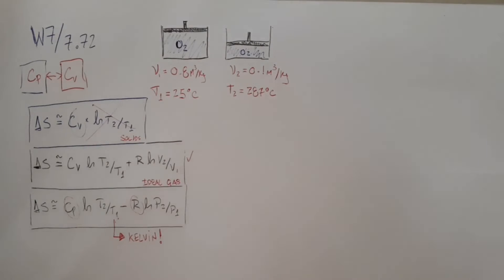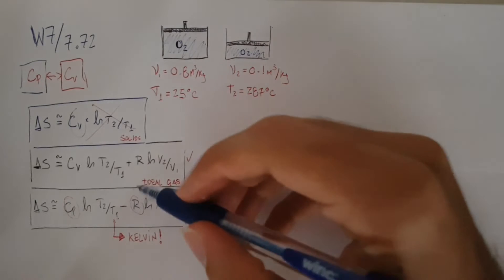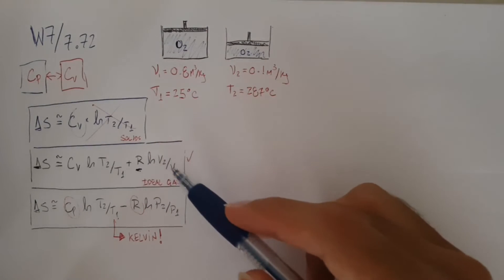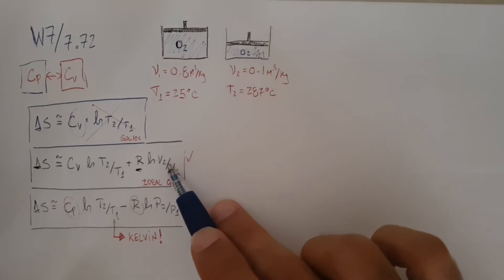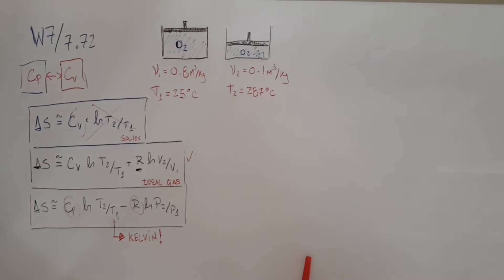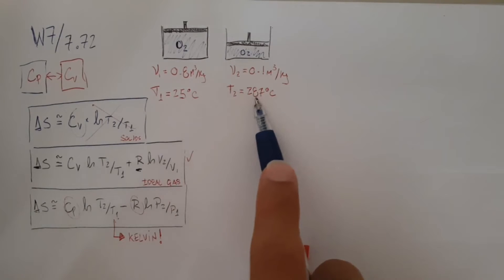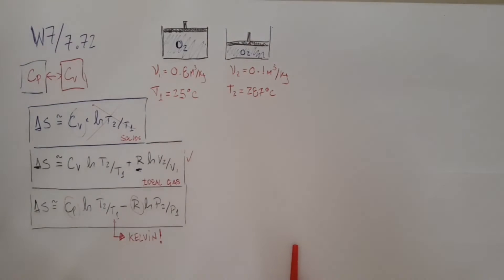To be able to solve that, we need R, which we can grab from the table. We have the two volume relationships, and if there's no mass leaving, the relationship between the volumes and the specific volume is going to be the same because the ratio between them is the same—we're getting the volume divided by the mass, and because it's the same mass in both cases, it's going to be the same thing. We can grab R off the table, we have the two volumes, we have the two temperatures. I just need to convert them to Kelvin. The only thing we don't have is CV.